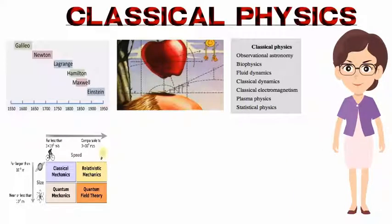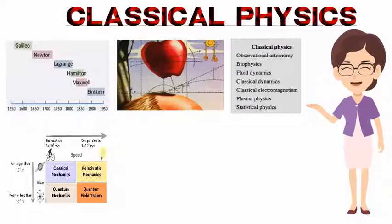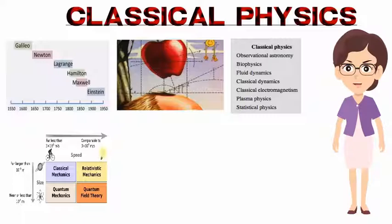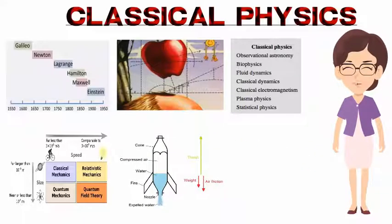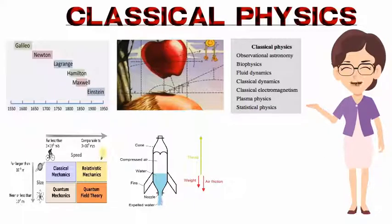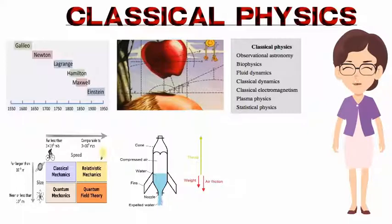If a currently accepted theory is considered to be modern and its introduction represented a major paradigm shift, then the previous theories, or new theories based on the older paradigm, will often be referred to as belonging to the realm of classical physics. As such, the definition of a classical theory depends on context.